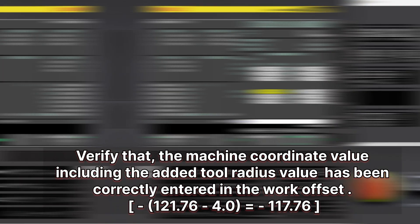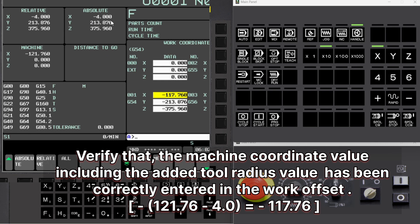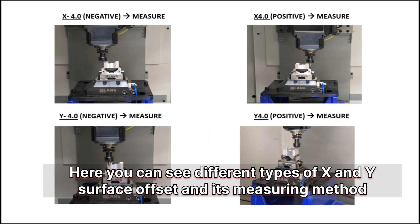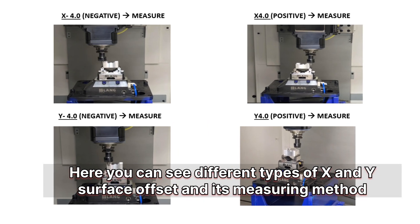Verify that the machine coordinate value including the added tool radius value has been correctly entered in the work offset. Here you can see different types of x and y surface offset and its measuring method.